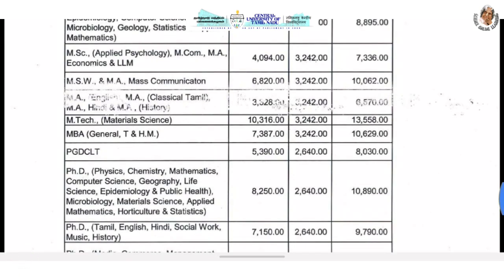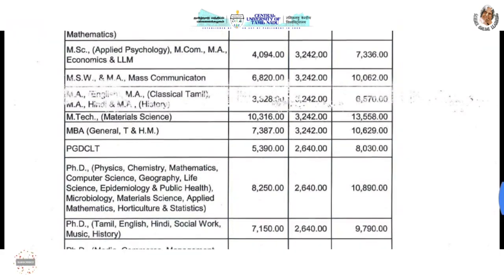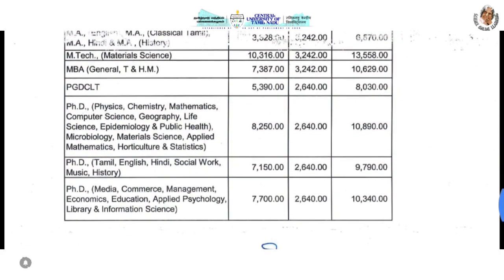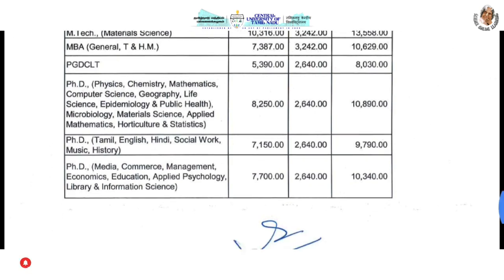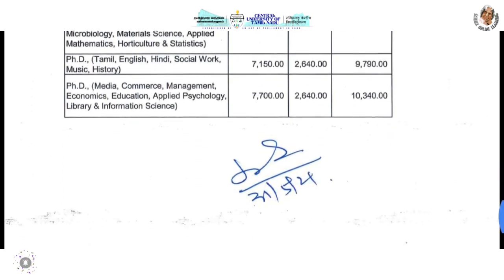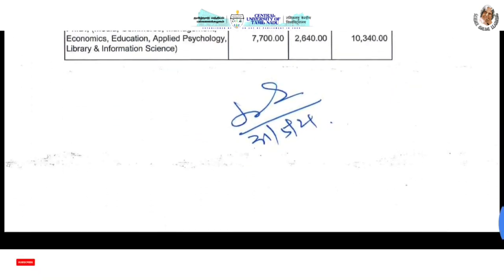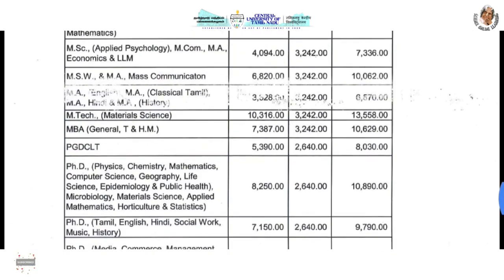MA English and classical Tamil course, History is 6,570. M.Tech is 13,558. MBA is 10,629. PGDCLT is 8,000. PhD is 10,800. If doing PhD in language, it is 10,000 to 10,500.